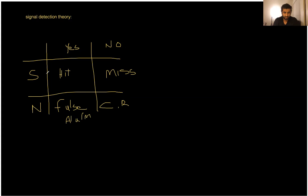Let's go over it one more time. Signal and you say yes — it's a hit. Signal and you say no — it's a miss. There was actually a signal and you said no, so you miss the signal. There is no signal, or there's noise — sometimes called no signal, but in psychology they usually call this noise, like white noise or internal noise. When there is noise and you say yes, you perceive something that is not there — this is a false alarm. And when there is no signal and you say no — that's a correct rejection.